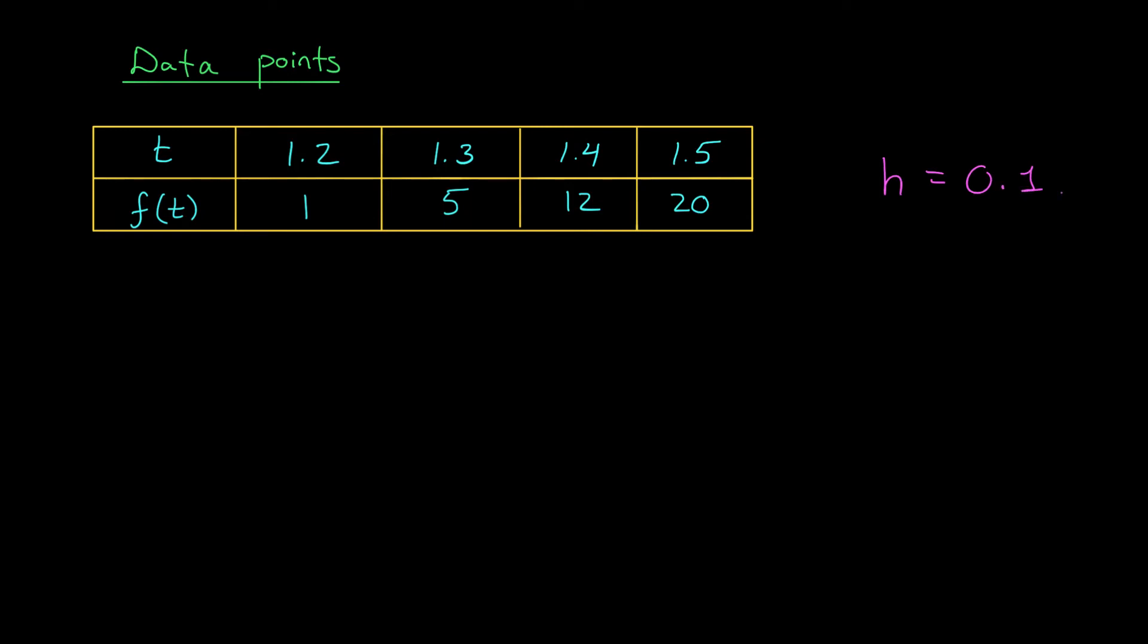h is 0.1. Now we still need our forward differences, right? We compute those in exactly the same way we did in the previous example. We make a column consisting of our output values, 1, 5, 12, 20, and then we take differences of each pair of numbers at a time.